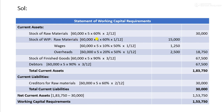The stock of raw material in work-in-progress is: 60,000 into selling price into 60% into 1 by 12. The selling price is 5. That gives 15,000.